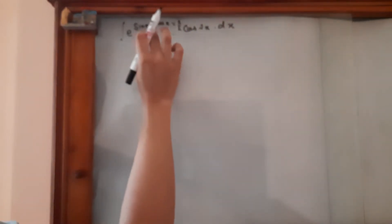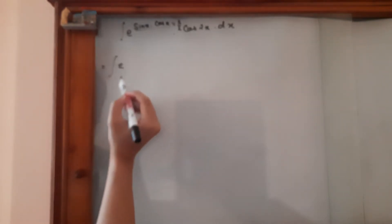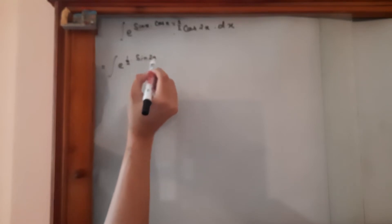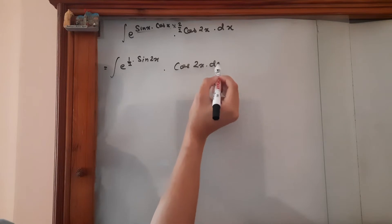So what we are going to do is we are going to multiply with 2 upon 2 over here and we are going to get e to the power 1 upon 2 sine 2x times cos 2x dx.